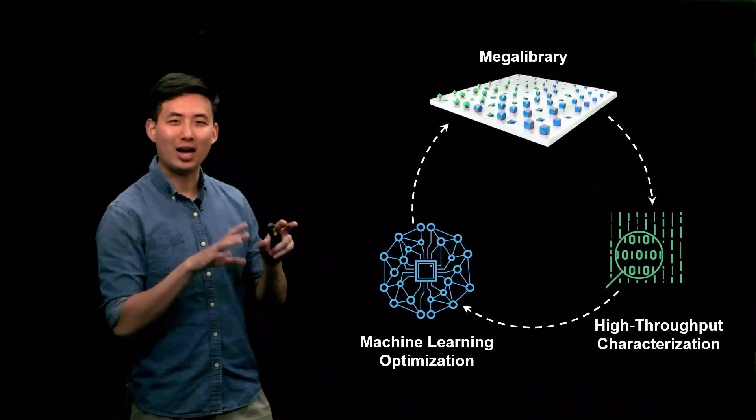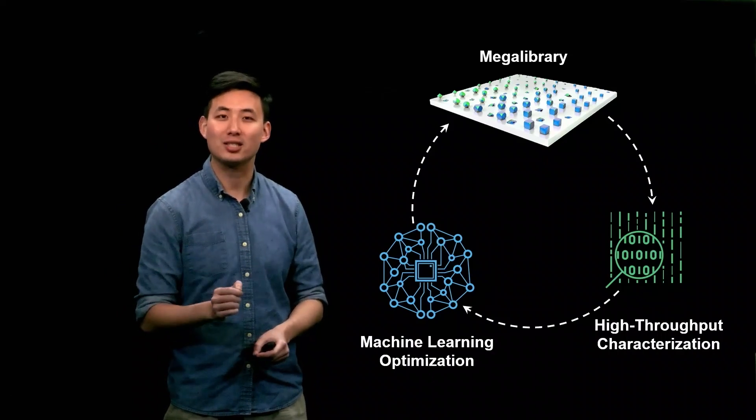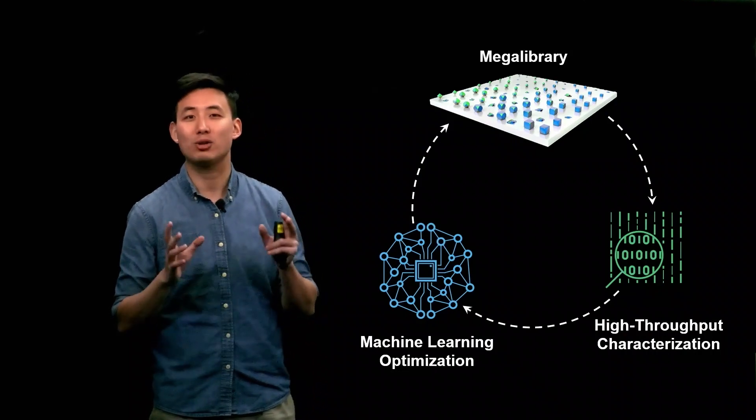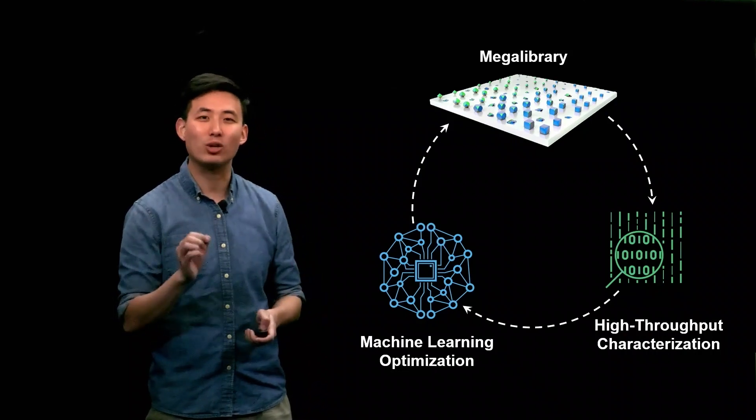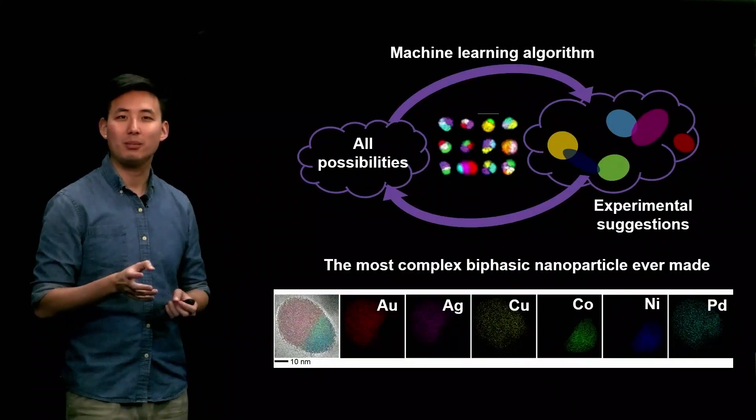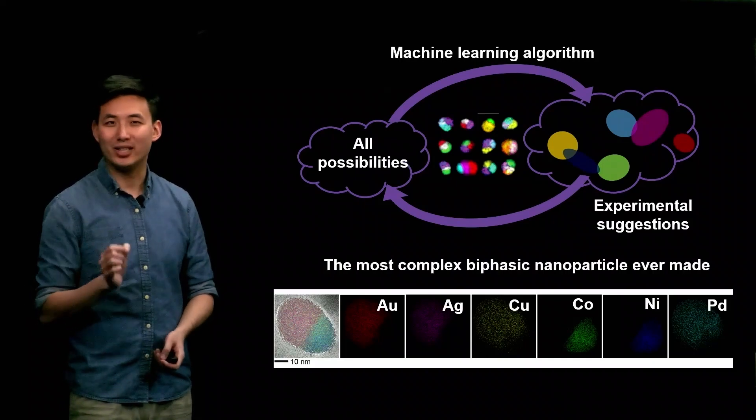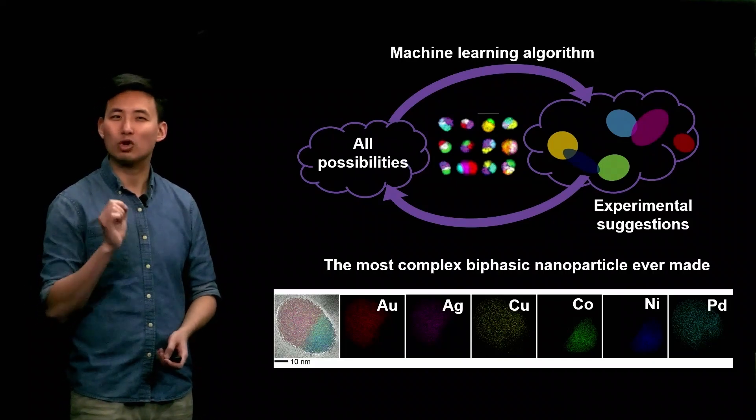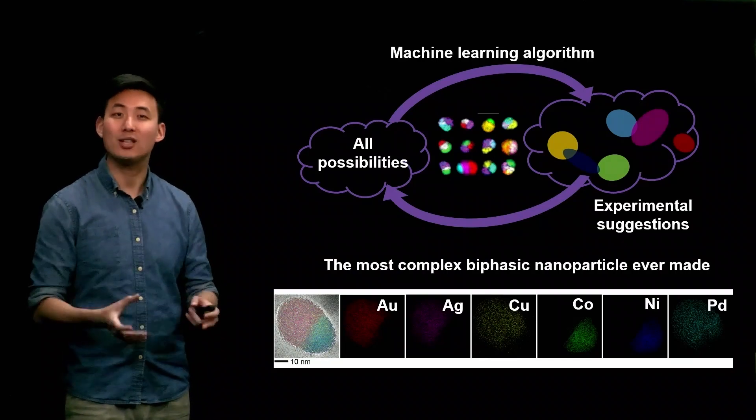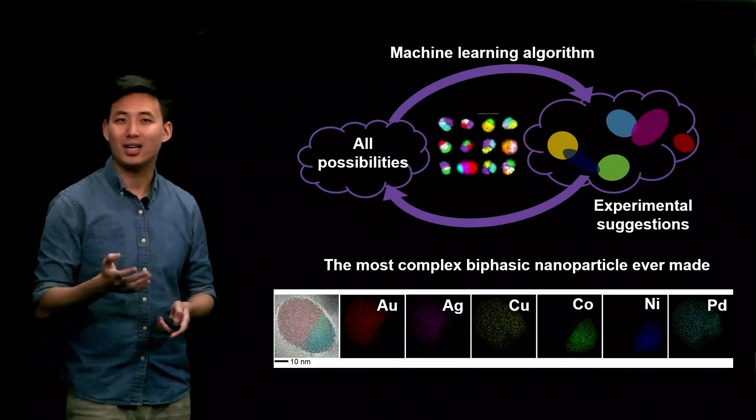We have combined our large-scale synthetic strategy with automated combinatorial high-throughput characterization techniques and design strategies assisted by AI to form the world's most powerful material discovery platform and source of high quality big data. For example, using big data provided by our material libraries, we trained a machine learning algorithm to identify and guide us to synthesize the most complex biphasic nanoparticle ever made. That's a nanoparticle containing many different elements, but only one phase boundary, which has promising applications in catalysis.